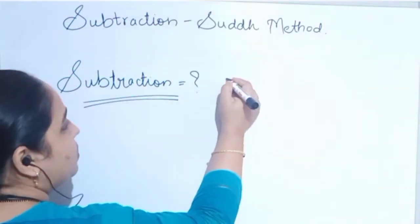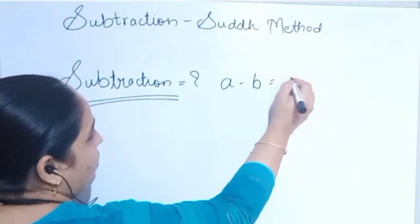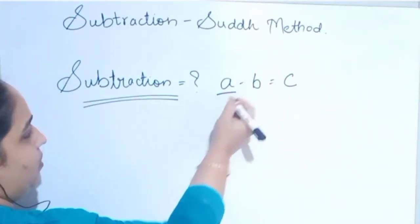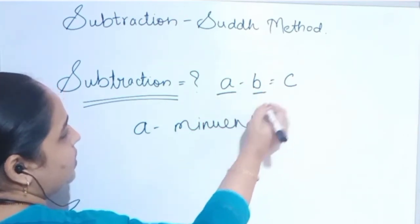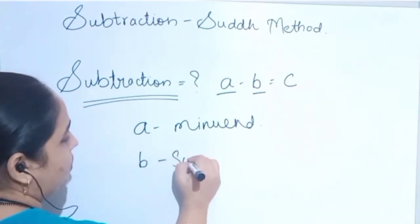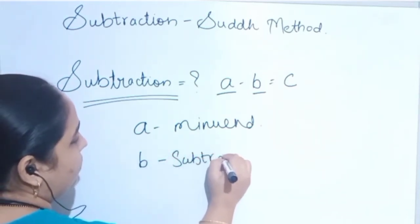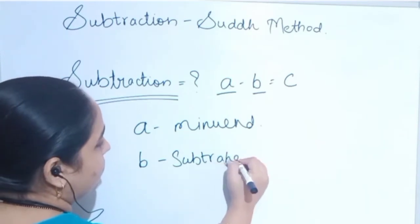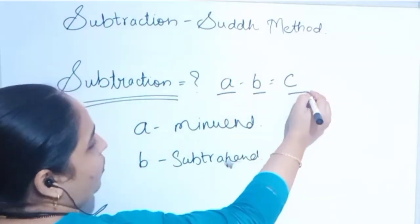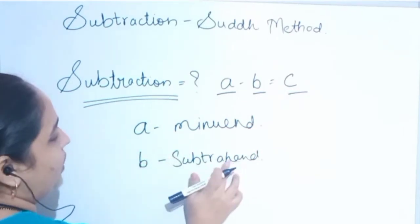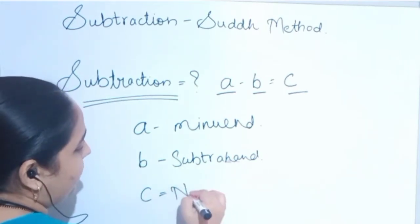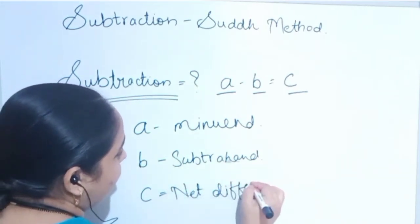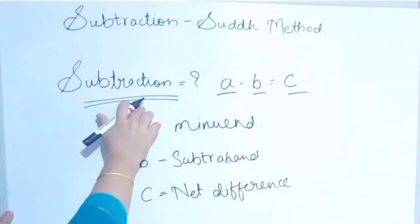What is subtraction? Subtraction means A minus B is equal to C. What is A? A is called minuend. What is B? B is called subtrahend. Then we will get the amount C. So A minus B, minuend minus subtrahend, is called net difference. So basically subtraction means A minus B equals C, the net difference between two numbers.